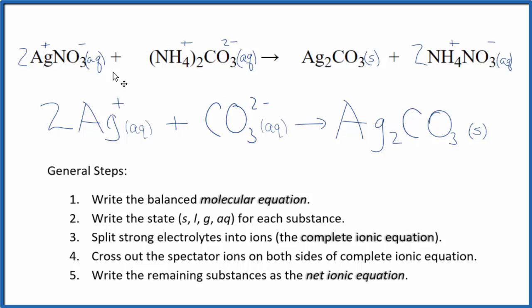This is Dr. B with the balanced net ionic equation for AgNO3 plus (NH4)2CO3. Note that Ag2CO3, that's the solid, so that's the precipitate in this reaction.